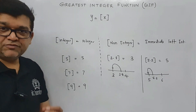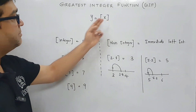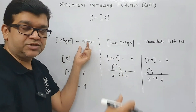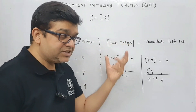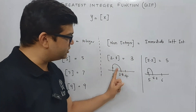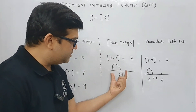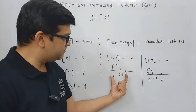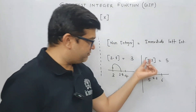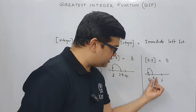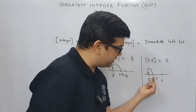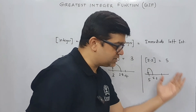So the greatest integer function first checks the input: if the input is an integer, the output is simply that integer. If the input is a non-integer like 3.8, that non-integer lies between two consecutive integers, and the output will be the immediate left integer. For example, 5.2 lies between 5 and 6, so box of 5.2 is 5.